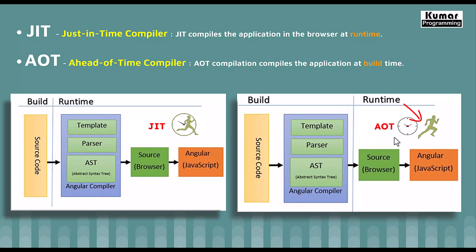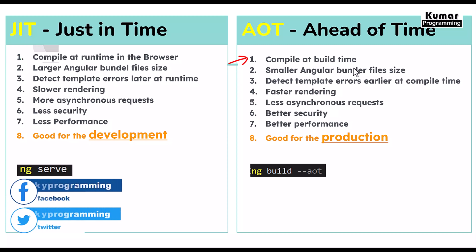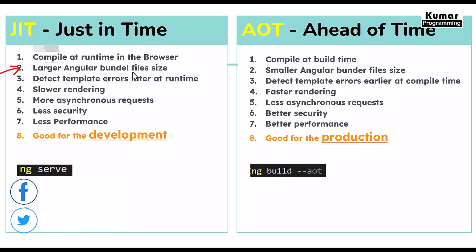Now let's see the other major differences between JIT and AOT. JIT compiles at runtime in the browser and AOT compiles at build time. The second difference: JIT has a larger Angular bundle file size, and AOT has a smaller Angular bundle file size — because with JIT we are sending the compiler along with the code to the browser, whereas with AOT the code is already compiled before being sent.